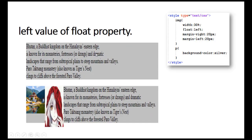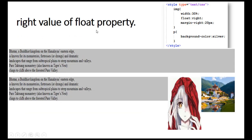The second value is left. Let's now give the float property a value of left and add some margins around the image. We now have the image on the left side with the paragraph wrapped around the image. The background color I've set is silver.